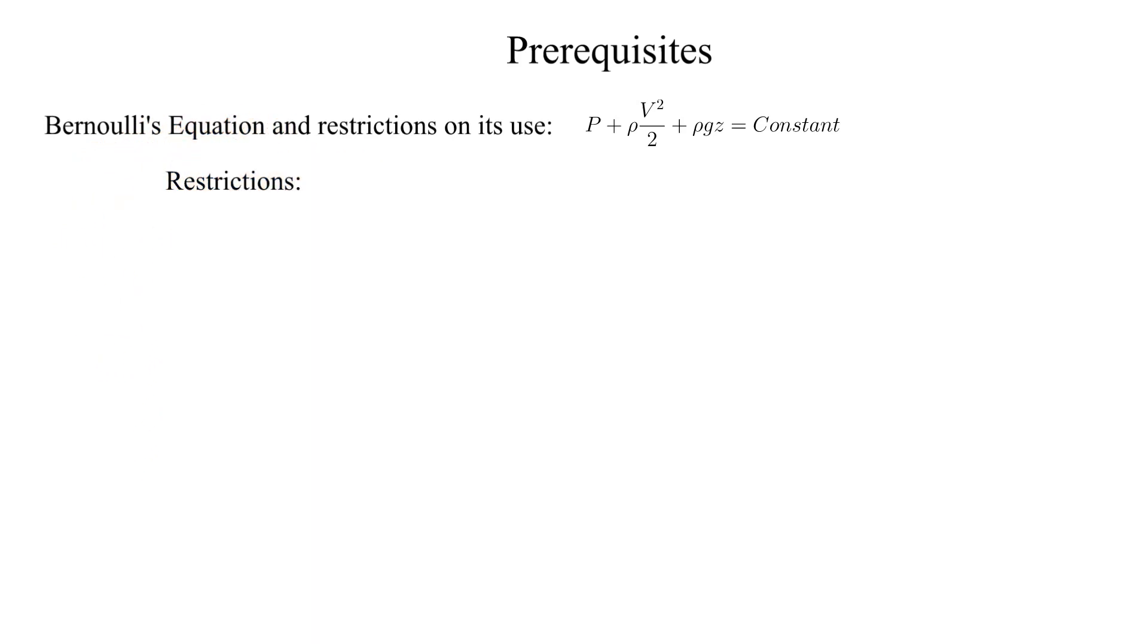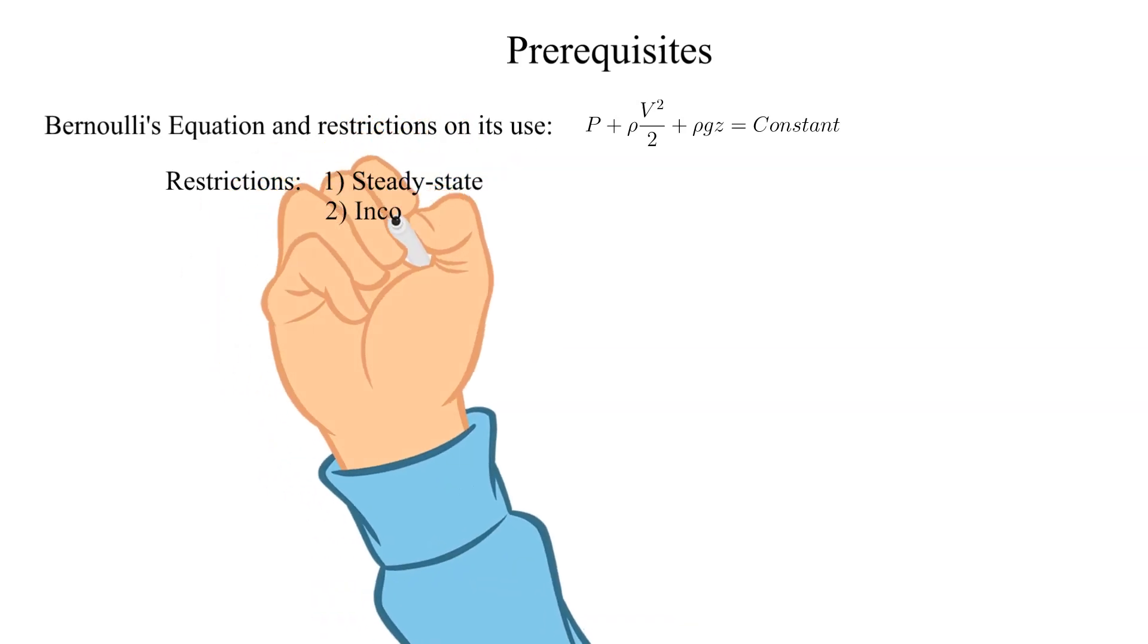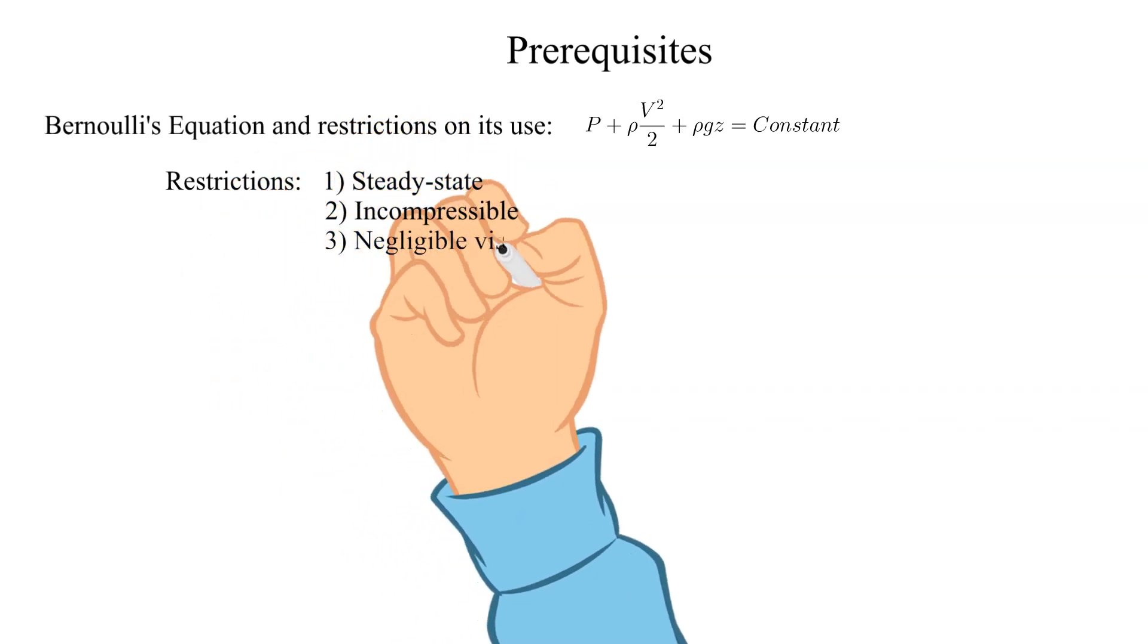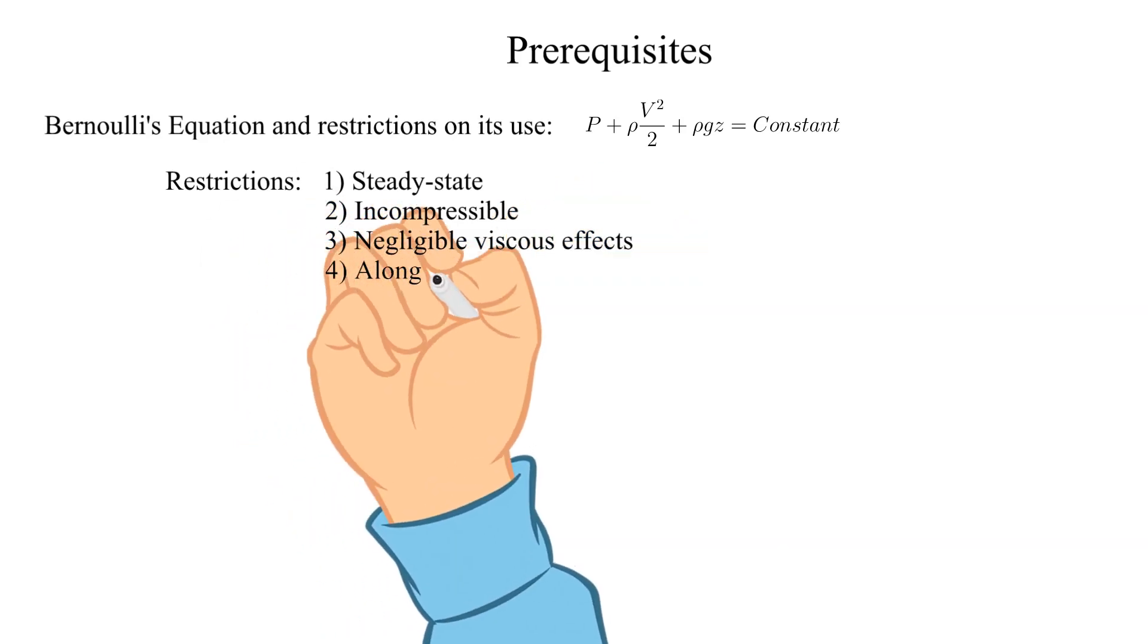Let's review the four restrictions to use this version of Bernoulli's equation. 1. Steady state. 2. Incompressible. 3. Negligible viscous effects. 4. Applied along a streamline.